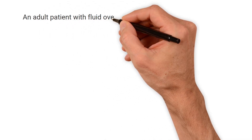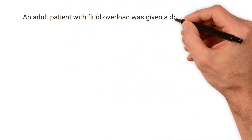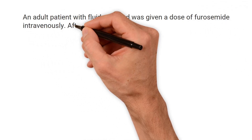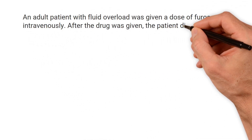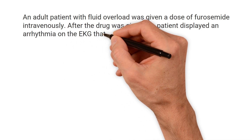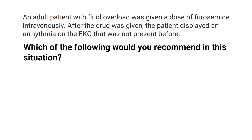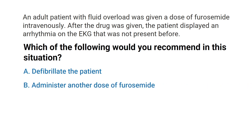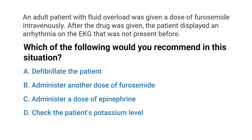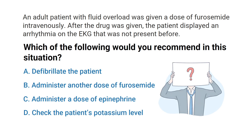An adult patient with fluid overload was given a dose of furosemide intravenously. After the drug was given, the patient displayed an arrhythmia on the EKG that was not present before. Which of the following would you recommend? A) Defibrillate the patient, B) Administer another dose of furosemide, C) Administer a dose of epinephrine, or D) Check the patient's potassium level.